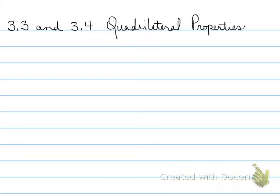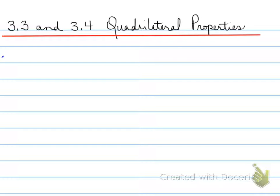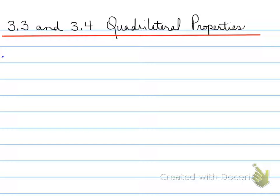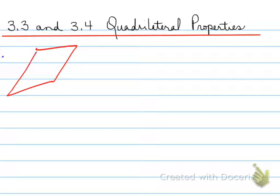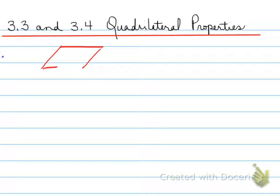3.3 and 3.4 quadrilateral properties. We're going to be looking at different quadrilaterals in this unit. A quadrilateral is a four-sided shape, and every quadrilateral can be classified further. For example, a randomly drawn four-sided shape can be classified as a parallelogram, which has opposite sides that are parallel to each other and equal in length.